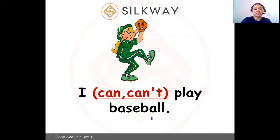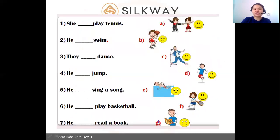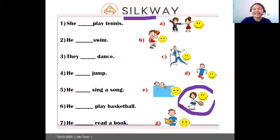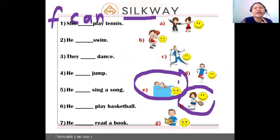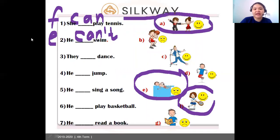Let's continue with our matching exercise. If you see a smiley face it means 'can,' and if you see a sad face it means 'can't.' She can play tennis — that is letter F. He swim — you can see a sad face, so you say: he can't swim — that is letter E. They — it's a smiley, so: they can dance — that is letter A.